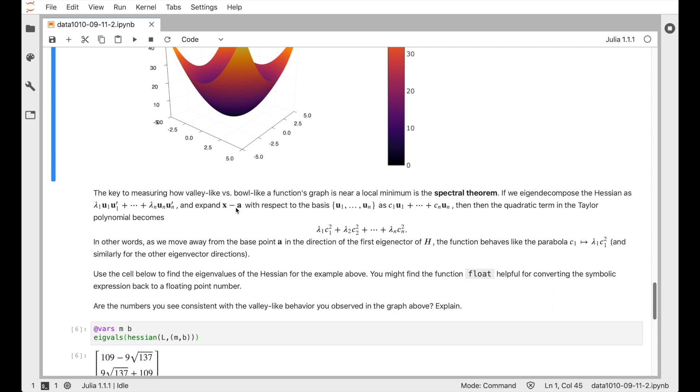And then instead of thinking about displacement vector x minus a, which is telling us how we're moving away from that base point, instead of thinking of it in the original basis, the standard basis that it's given in, we think of it in terms of the basis of eigenvectors, u1 up to un. So we write it out as c1 u1 and so on up to cn un. So these c's are just telling us how much we're going in that direction specified by that particular eigenvector.